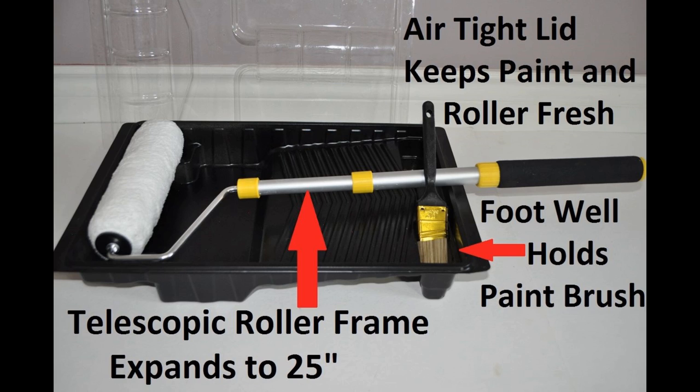The tray has additional space for two 9 inch covers, a paint brush and other accessories like a can opener and an edge trimmer.